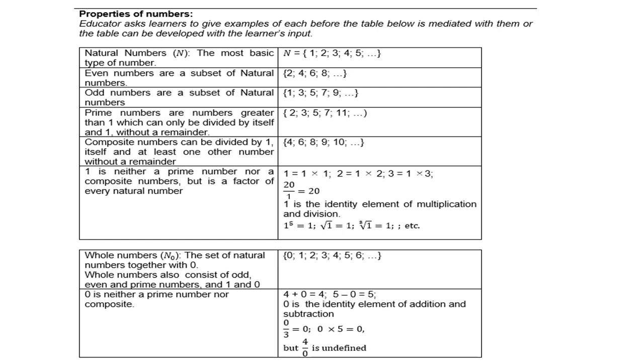Prime numbers are numbers greater than 1 which can only be divided by itself and 1 without a remainder: 2, 3, 5, 7, 11, etc. Two is the only even prime number; all the others are odd.